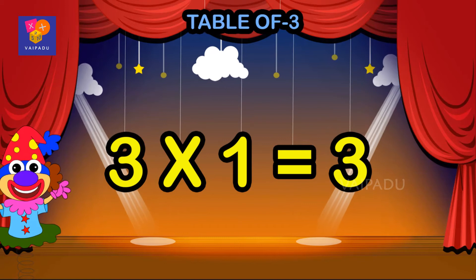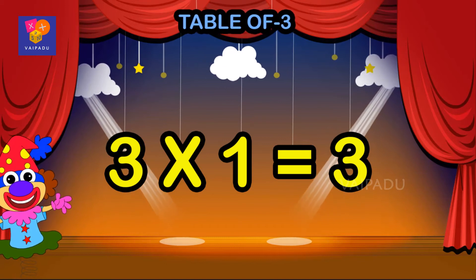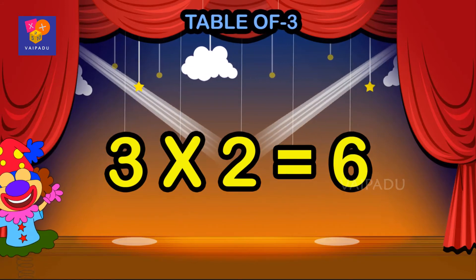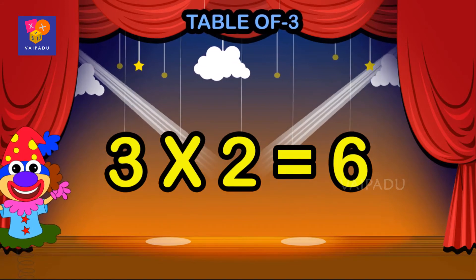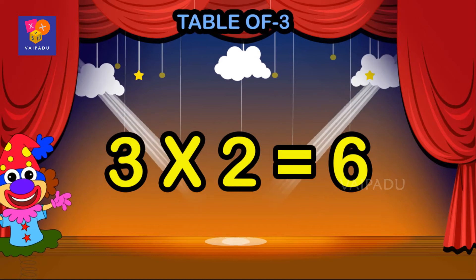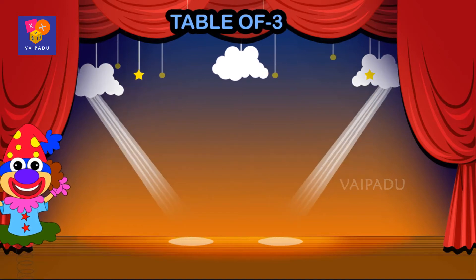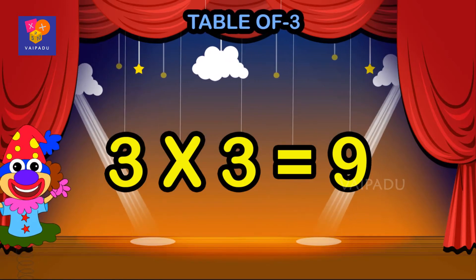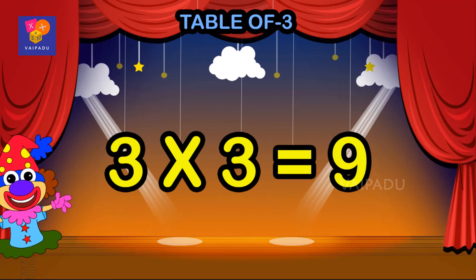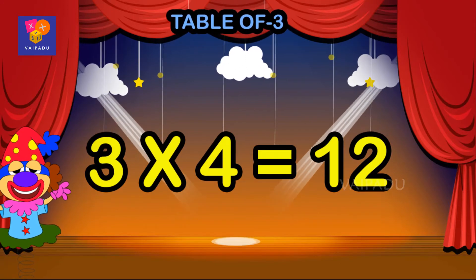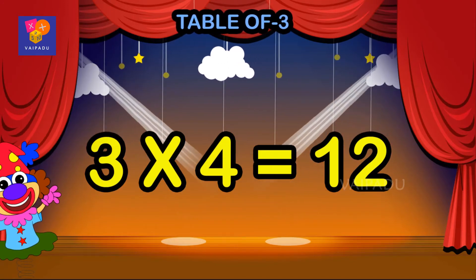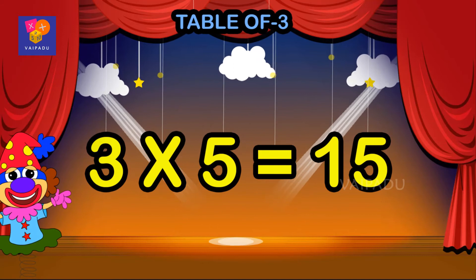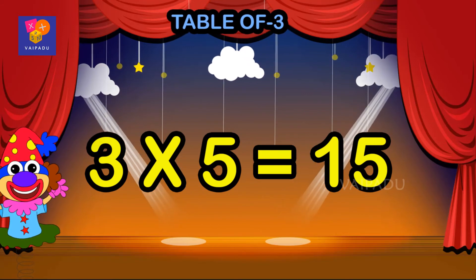Three ones are three, three twos are six, three threes are nine, three fours are twelve, three fives are fifteen.